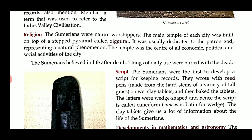The Sumerians developed a system of writing known as cuneiform. The script was wedge-shaped. It was written from right to left with a pen made with reed or bone, called a stylus.